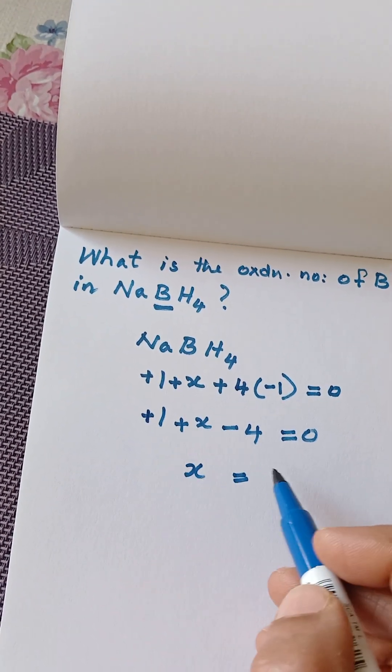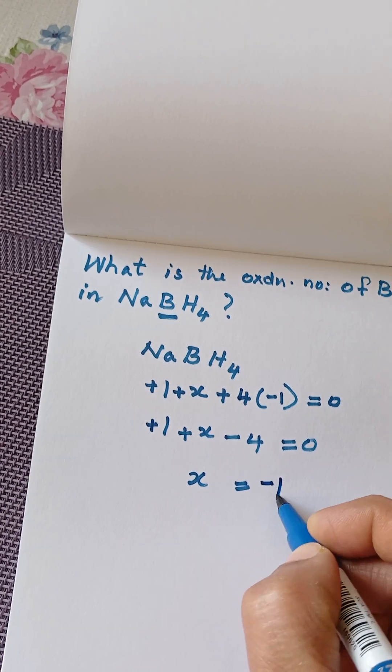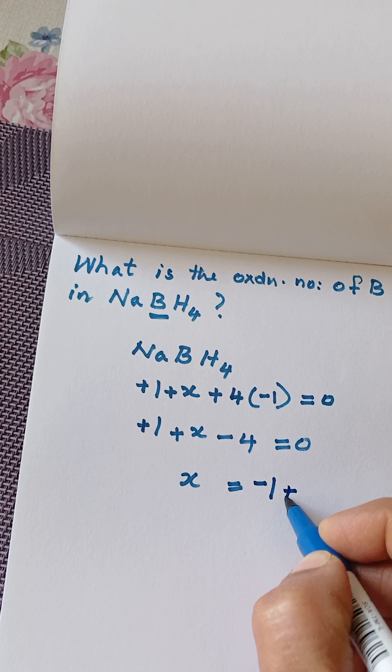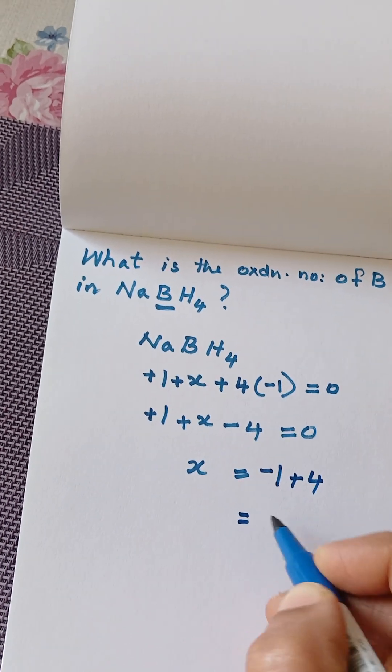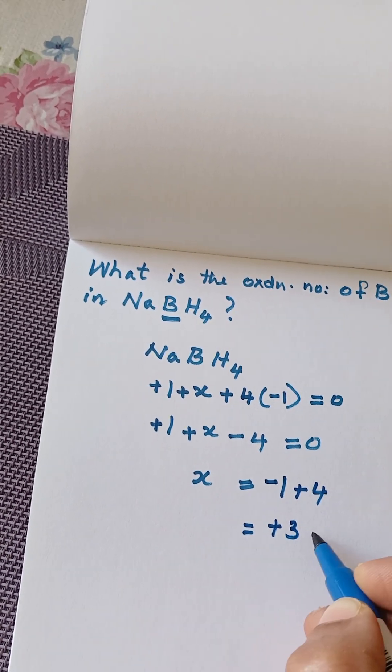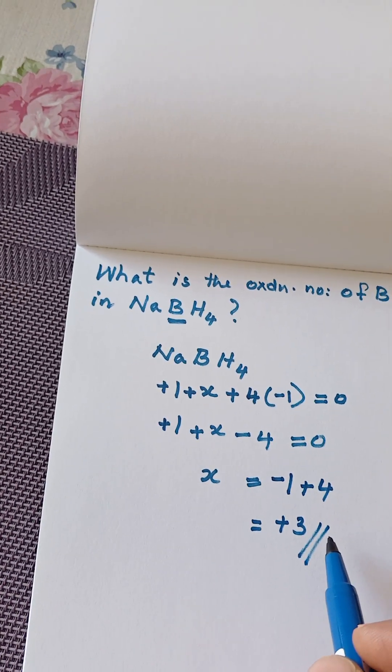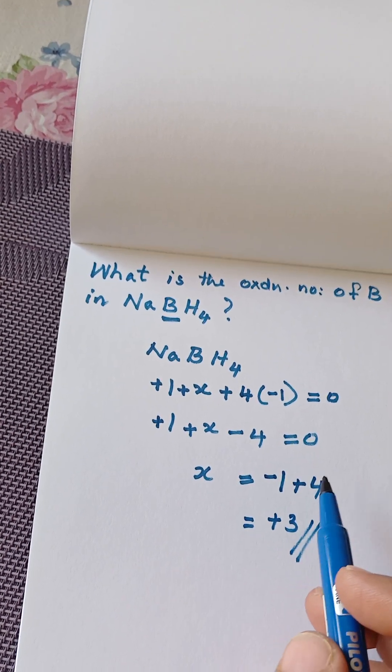This plus 1 when goes to the other side will become minus 1 and this minus 4 will become plus 4 which is equal to plus 3. So boron exhibits plus 3 oxidation state in NaBH4.